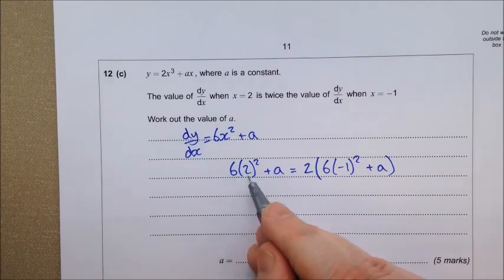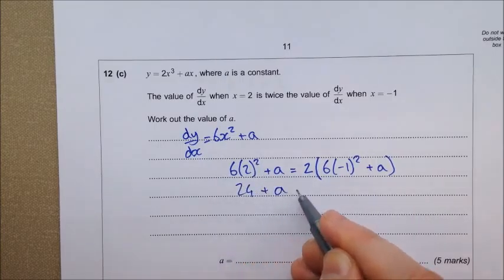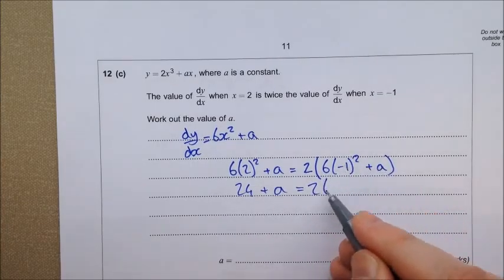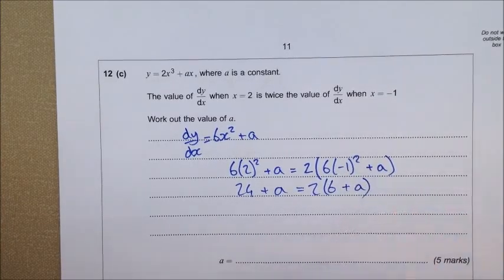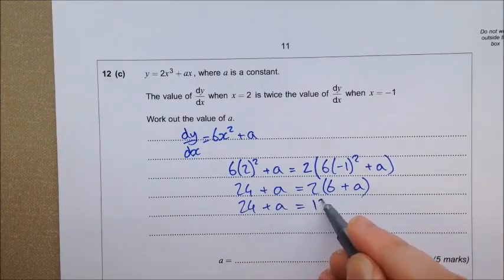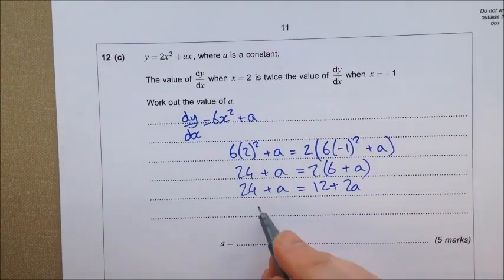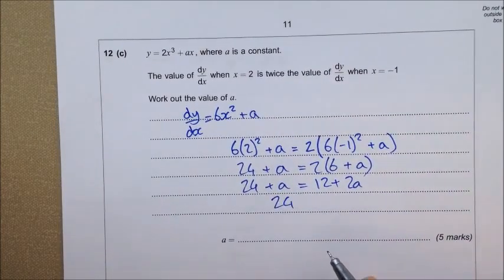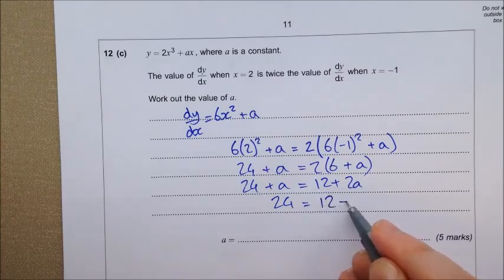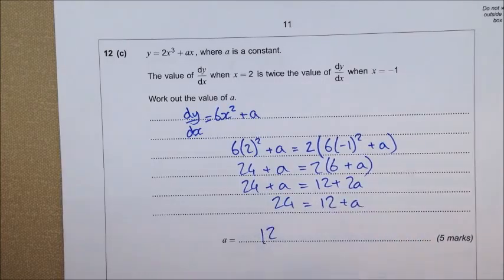So, 6 lots of, what's this, 4, that's 24 plus a, equals 2 lots of, this will be 1, so 6 plus a. There we go. 24 plus a equals 12 plus 2a. Take a away from both sides. And that means that a equals 12.